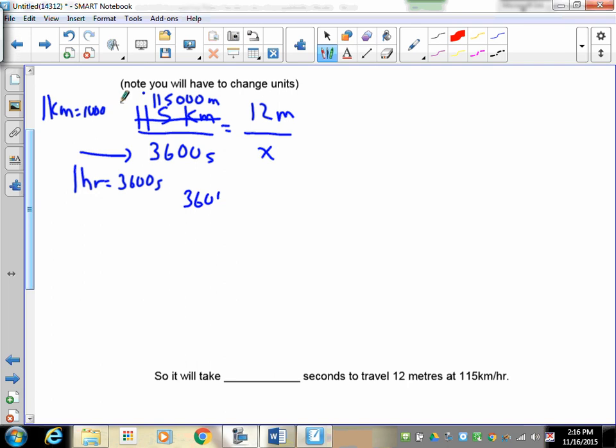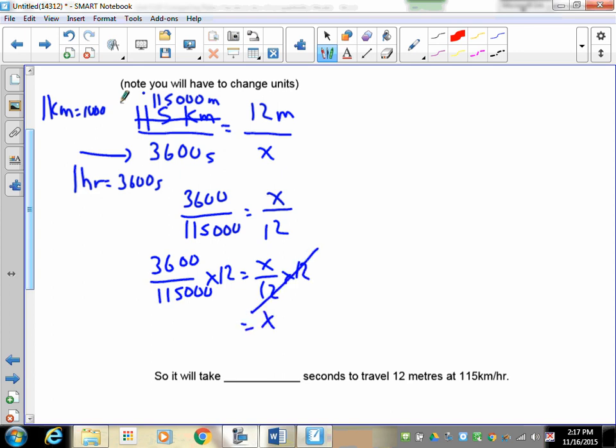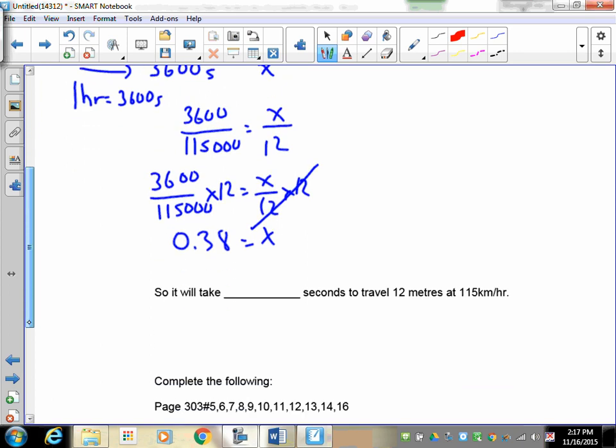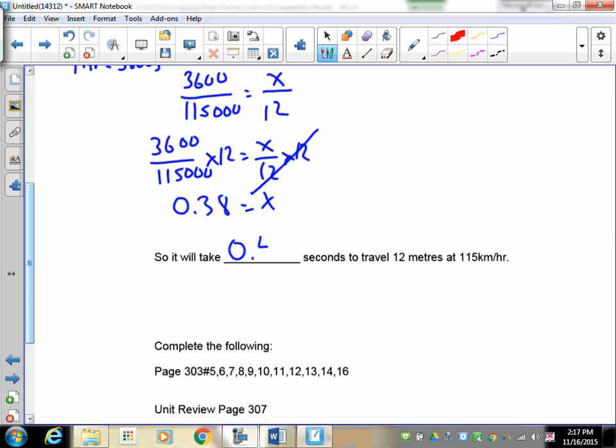So now all that's left to do is to flip it and multiply. So I now have 3,600 over 115,000 is equal to x over 12. So then multiplying both sides, those cancel. And 3,600 divided by 115,000 times 12 is 0.38 seconds. So just under 4 tenths of a second. Can you react that fast and avoid the deer? Well, it would be awfully close. Depends on if you're paying attention. If you saw it coming right out of the ditch 12 meters ahead of you, and you swerved just at the right time, you might be able to take the deer into the side of the car. But yeah, you're probably going to be calling your insurance company.